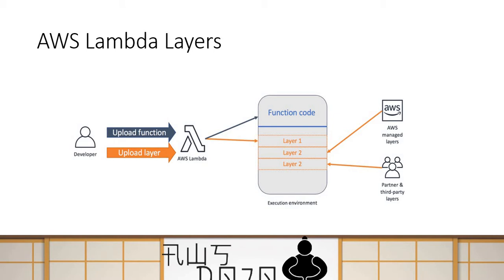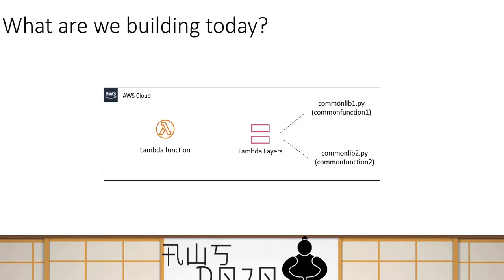Today we are going to do a very quick and simple exercise, but the whole purpose is to understand how Lambda layer works. We are going to create a Lambda layer that will have two Python files — common lib1 and common lib2 — and these two libraries will have two functions, common function one and common function two. We'll mount this Lambda layer to a Lambda function and then from the Lambda function simply call these libraries, demonstrating how Lambda layer works with Lambda functions. The example is simple because the purpose is to quickly make you understand how Lambda layer works, but you can build very complex business logic and reusable components through layers.